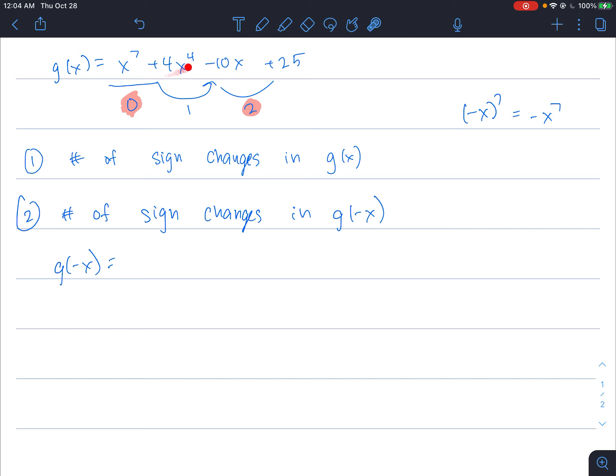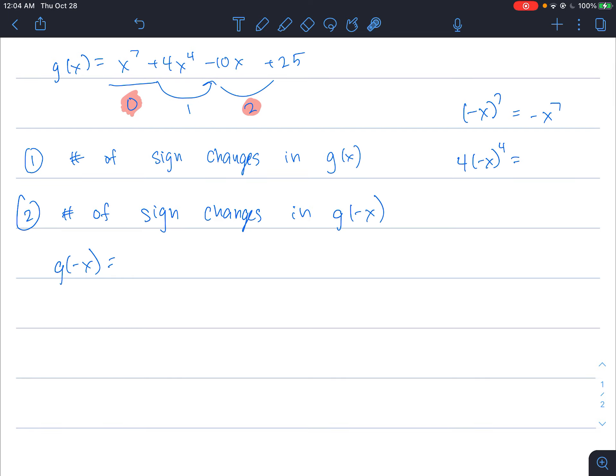For something like x to the fourth power, four negative x to the fourth power, because negative x is being raised to the fourth power, which means you're multiplying negative x by itself four times over, it's still going to be positive. So this is still going to be 4x to the fourth. How I like to do this step is just anything, any term with a variable to an odd degree, change the sign, and anything to an even degree, keep the sign the same. So g of negative x would be negative x to the seventh plus 4x to the fourth plus 10x plus 25.